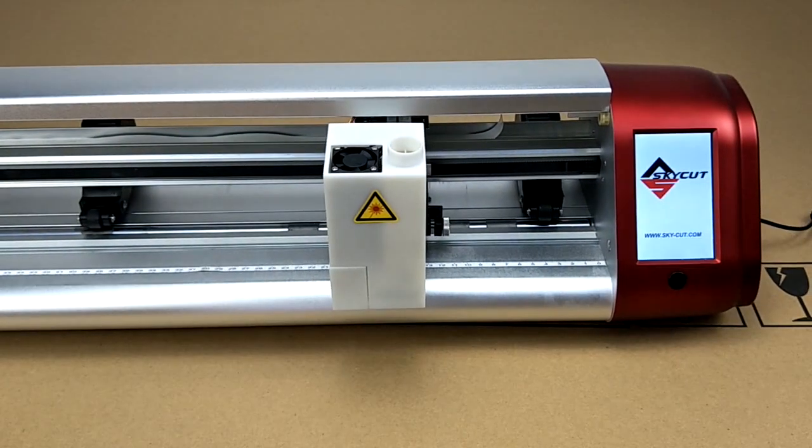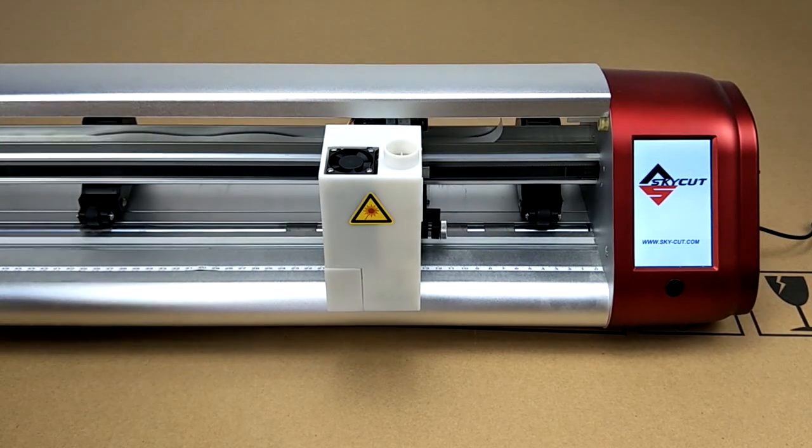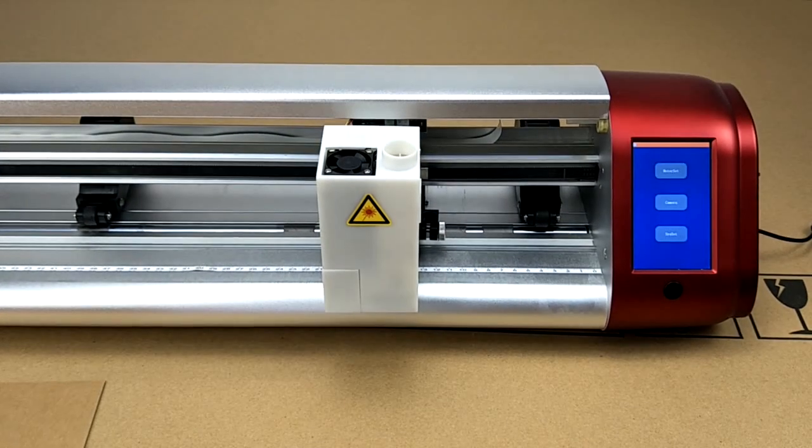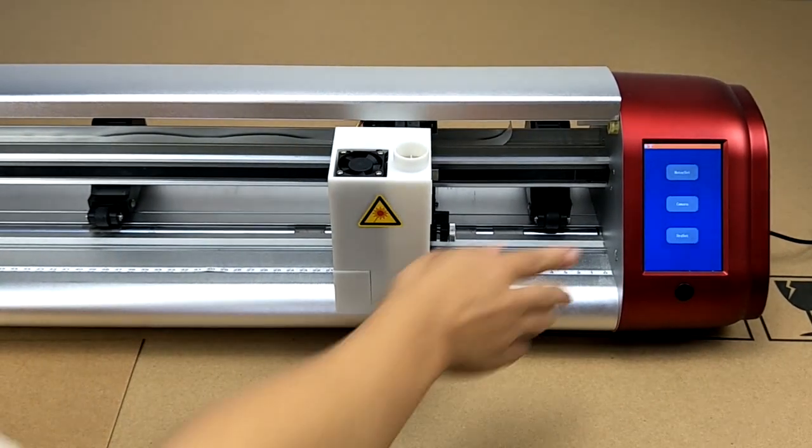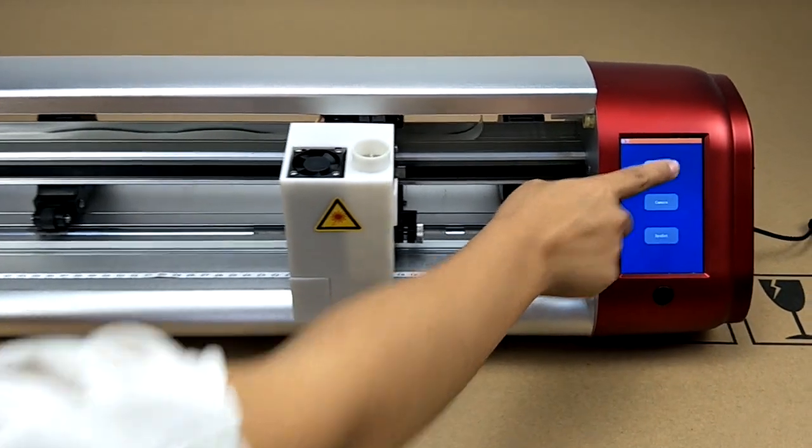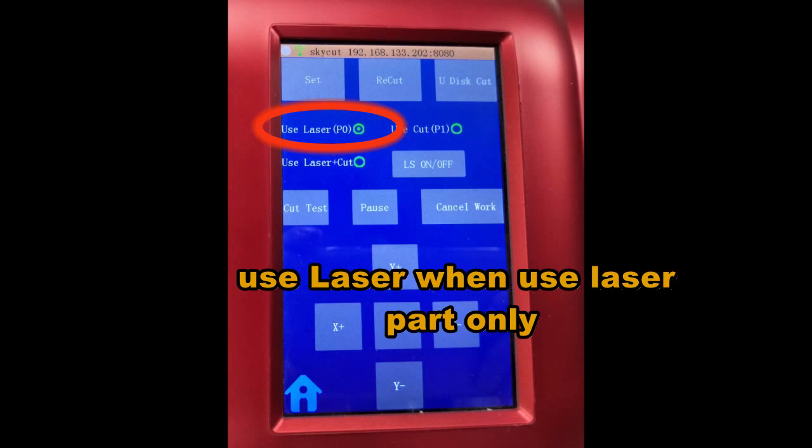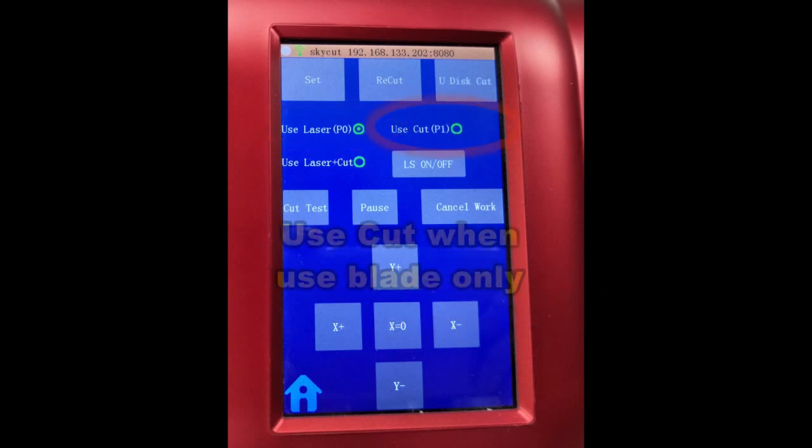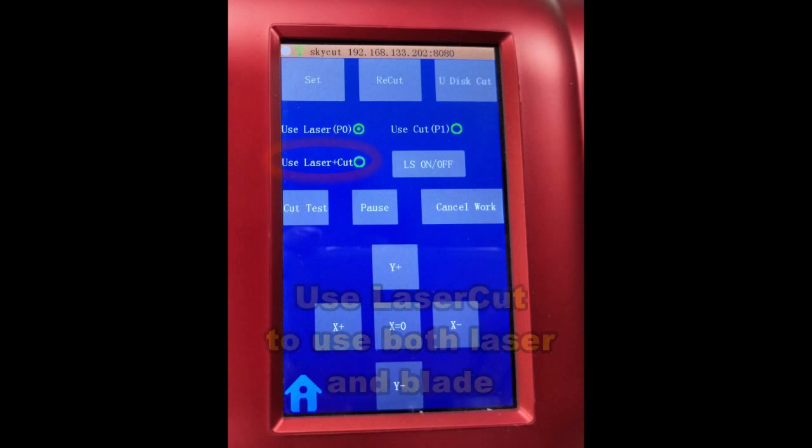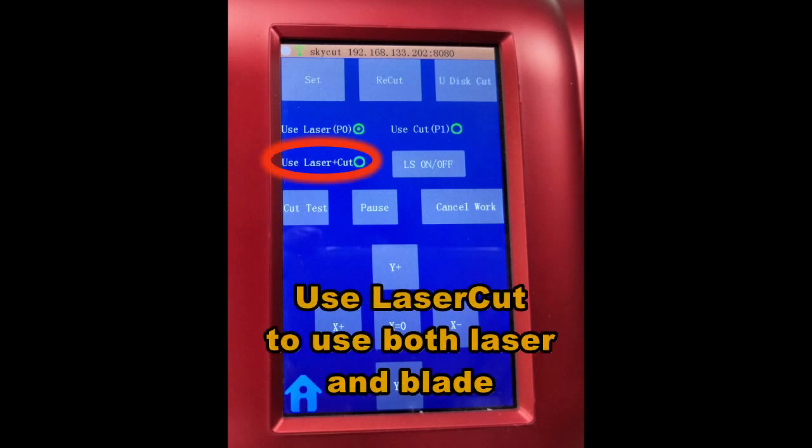Now let's power on the cutter to engrave. We touch motor set. We can see the menu. If we use laser only, we choose use laser. When we use blade only, we choose use cut. And we can choose use laser cut to use both blade and laser, just like dual hands.